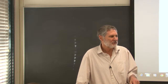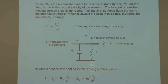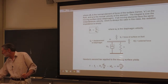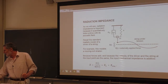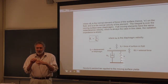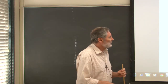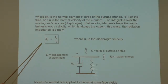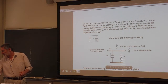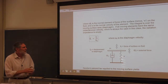We started talking about radiation impedance yesterday. For all the sources in this course, all moving elements are going to be in phase with the same amplitude, which is typically the case. In that case, the general definition of the radiation impedance reduces to the force exerted by the moving surface on the fluid divided by the velocity of the surface.